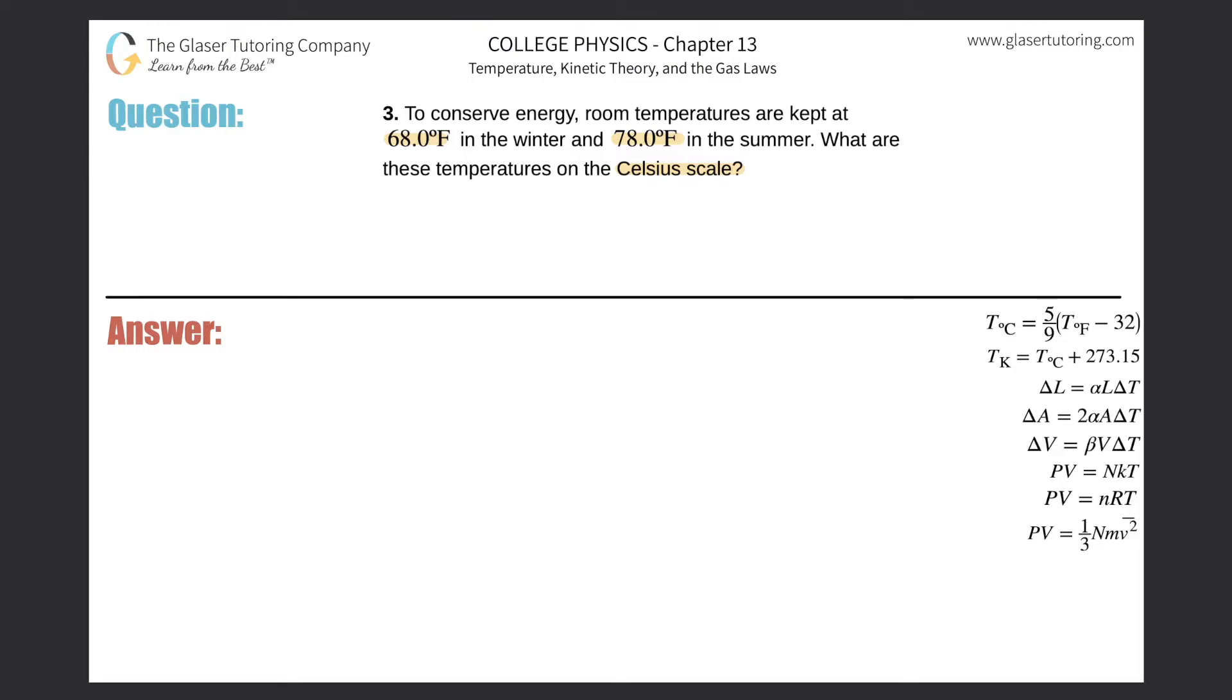So basically we want Celsius, and we want to think about a formula that relates Celsius to Fahrenheit. We do have a nice formula that does that relation over here on the right-hand side. It tells us that the Celsius temperature will be equal to 5 ninths multiplied by the Fahrenheit temperature minus 32.